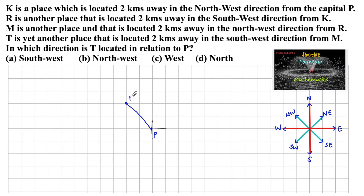R is another place located two kilometers away in the southwest direction from K. Let us mark from K. Southwest direction means below, between south and west. So we can draw two kilometers in the southwest direction from K.